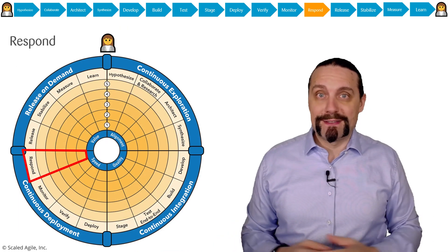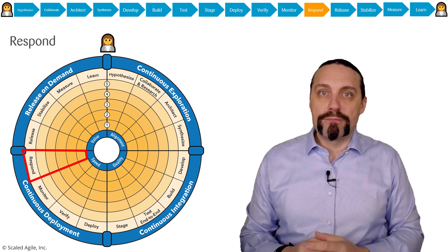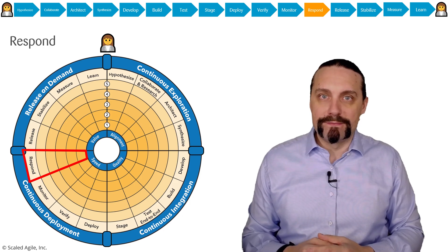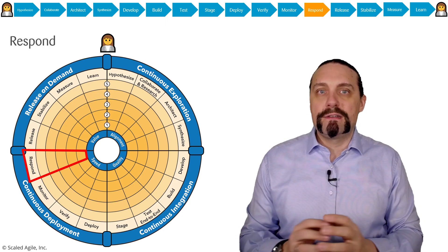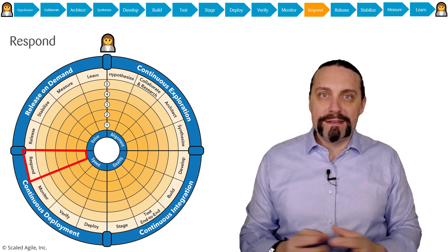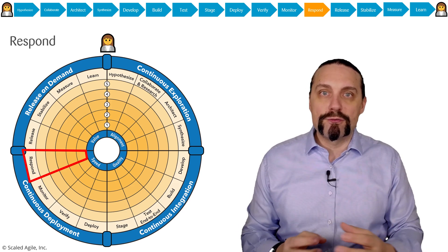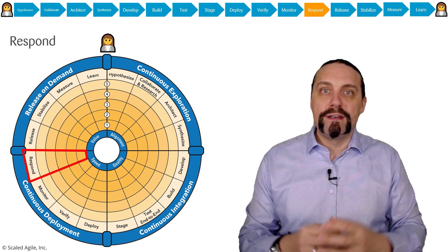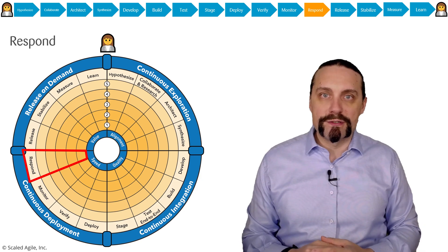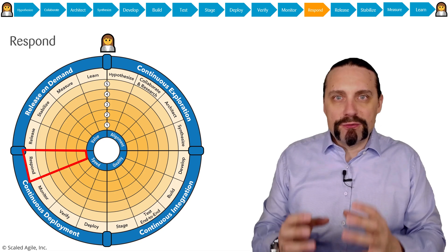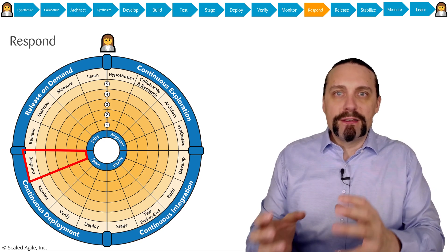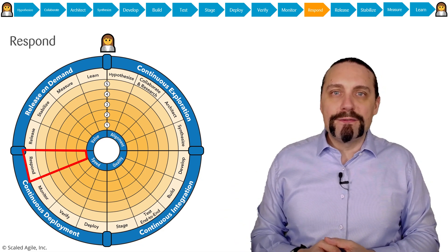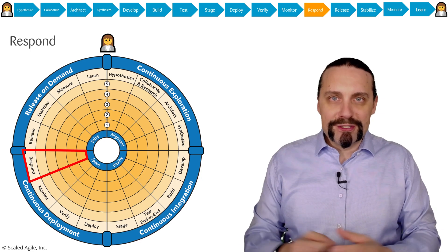Shit happens — you cannot foresee every production issue that could happen. Therefore, it is absolutely crucial that you create an environment for cross-team collaboration and that you have proactive detection of issues in production. With that we are able to release on demand, which we will cover in the next video. And with that we are at the end of this video.